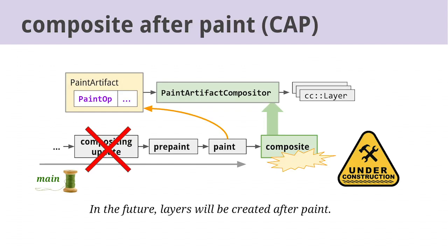In the future, we're going to create layers after paint instead of before paint — that's a project called Composite After Paint, or CAP. The goal of CAP is to let us make more flexible and fine-grained compositing decisions, and to decouple some things where previously becoming composited would have all these other effects on properties. CAP requires that decoupling because paint needs to know about the paint properties, but in the future it won't know anything about layers, because layers are going to be created in the next stage, which is the paint artifact compositor.